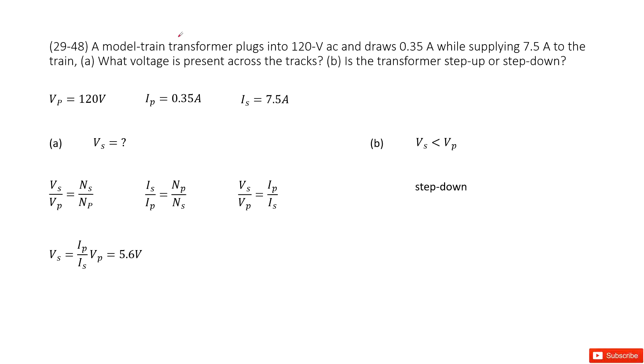So we have a transformer and the primary voltage is given as 120V. Primary current is given as 0.35 amperes, and the secondary current is given. The question asks what is the secondary voltage? So this is easy.